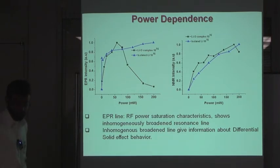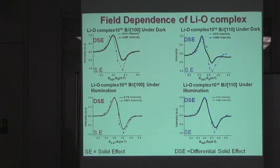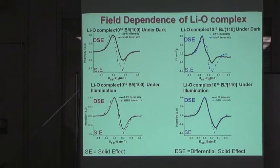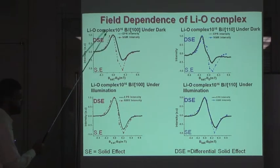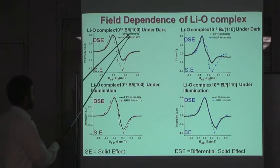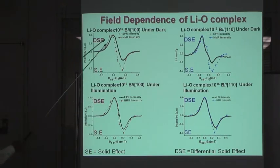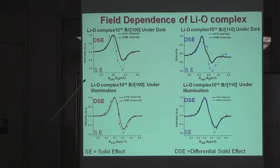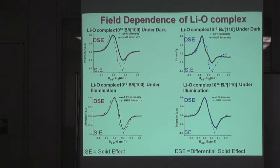Power dependence: in both samples, isolated lithium and lithium-oxygen complex show inhomogeneous broadening behavior when we saturate the EPR line. Inhomogeneous broadening gives information about the differential solid effect. Now the field dependence data for the lithium-oxygen complex: the y-axis represents normalized EPR intensity and NMR intensity, and the x-axis represents B_sat minus B_0, where B_sat is the saturation field where we saturate the EPR line. Each dot represents the saturation field and B_0 is the center field. For the lithium-oxygen complex with magnetic field parallel to the 100 plane under dark condition, the maximum intensity is observed at the peak point of the EPR line, showing that the flip-flip and flip-flop transitions occur exactly at the peak point — this gives information about the differential solid effect.